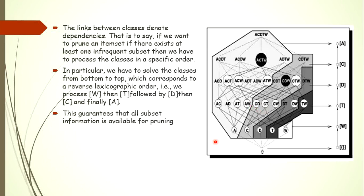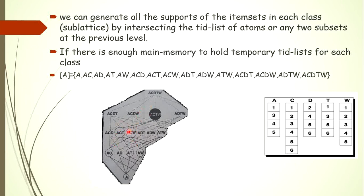For example, consider sub-lattice class A. If we want to check whether itemset ACW is frequent or not, we need to make sure all its subsets are frequent. But here we don't know whether subset CW is frequent or not. Until we check whether CW is frequent, we cannot prune itemset ACW. So if we traverse in reverse lexicographic order, all subset information is available before pruning. We can store a sub-lattice in main memory, check whether all itemsets of that sub-lattice are frequent, then replace it with another sub-lattice, and continue until we extract all frequent itemsets.